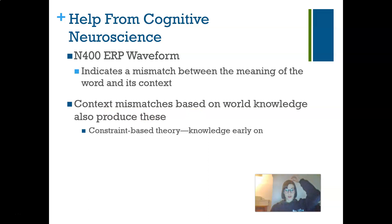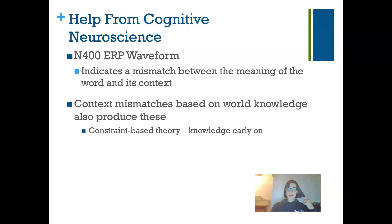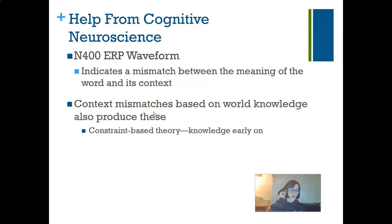For example, if I say something like 'the widow's wife stood next to her,' a widow implies that the wife is dead, but if the wife is standing next to the widow, that doesn't make any sense. This is a mismatch based on our knowledge, and it fits with constraint-based theories, because according to those theories, all possible knowledge is available early on.